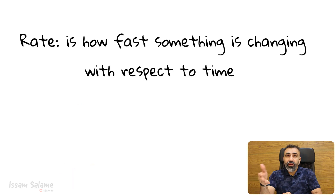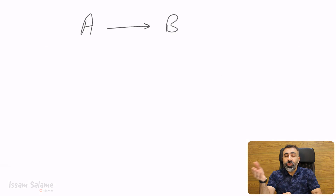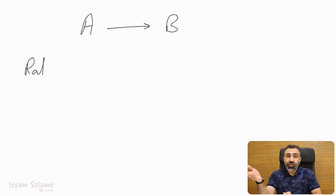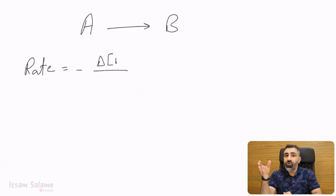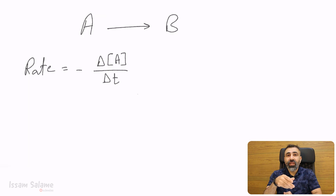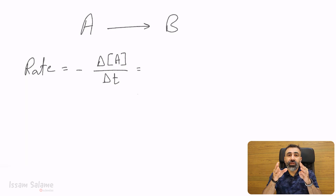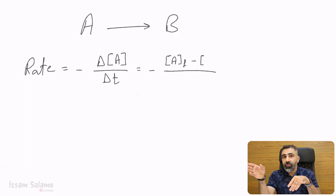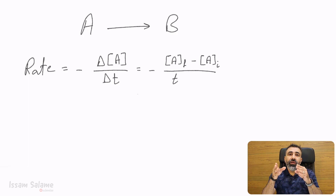If we have a chemical reaction like A produces B, to write the rate law for this chemical reaction, we have to write as follows. Rate is equal to negative delta concentration of A over delta T. Delta concentration of A means concentration of A final minus concentration of A initial, and delta T means T final minus T initial.